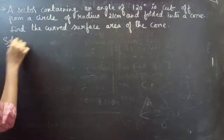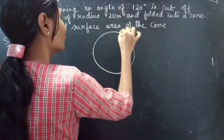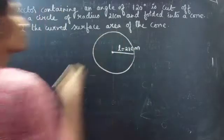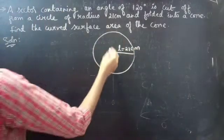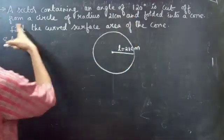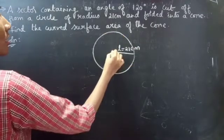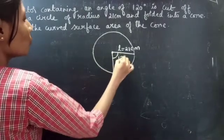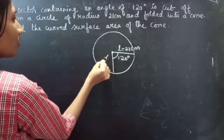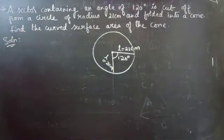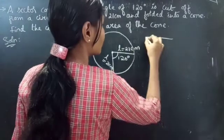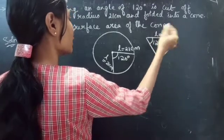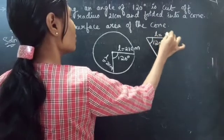Solution. Firstly, consider a circle with radius L equals to 21 cm. A sector of angle 120 degrees is cut off from the circle of radius 21. From this circle we are going to remove a sector of angle 120 degrees, and its radius is 21 cm — this is the radius of the sector.